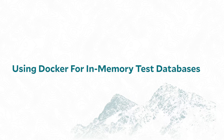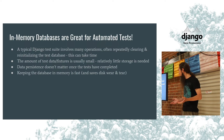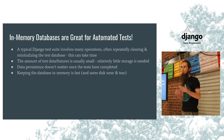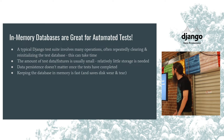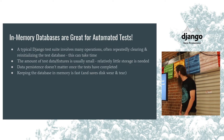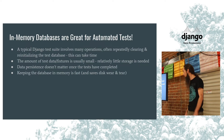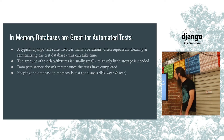In-memory databases are great for automated testing. Your Django test suite typically involves a lot of operations, often repeatedly clearing and reinitializing the whole database. But the amount of data is usually relatively small compared to a production setup, so it's small enough to fit in memory. We don't care about data persistence past the time it takes to run the tests, so having it in volatile memory is fine. So it's great to keep this all in-memory.